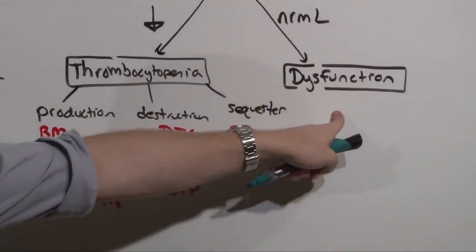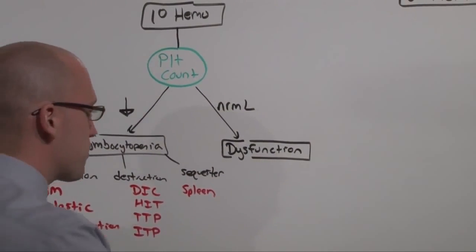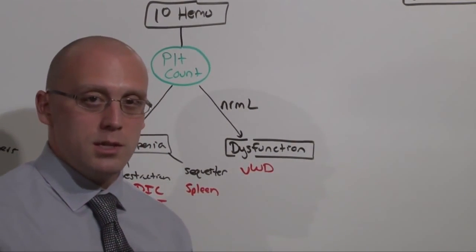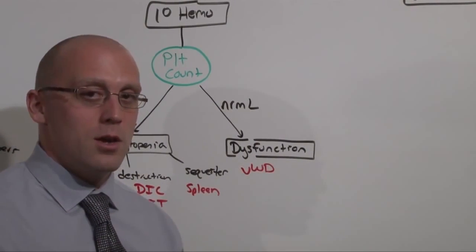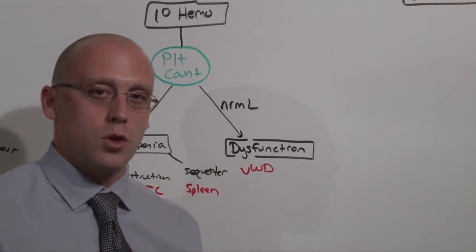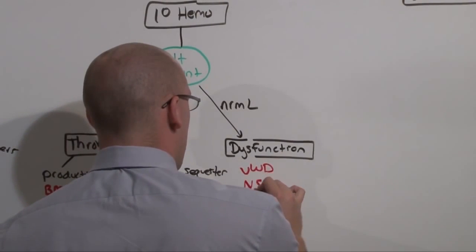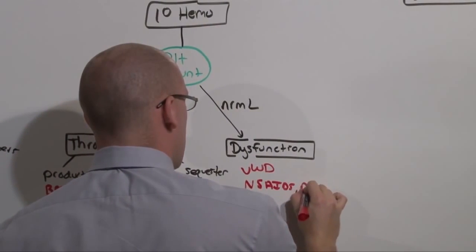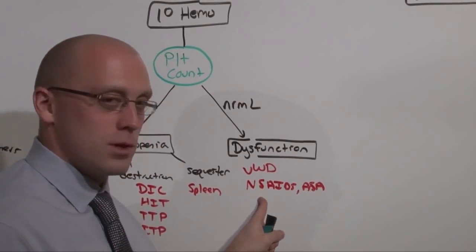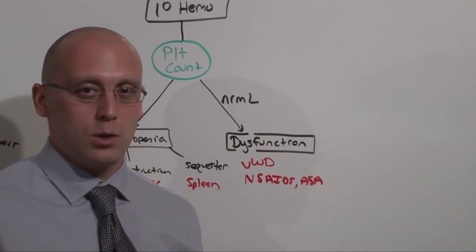If you come over and said to dysfunction where they have a normal platelet count, now you're talking about some congenital disorders or medications. Von Willebrand disease definitely is prevalent enough where you'll see it. Glansman's thrombastenia and Bernard-Soulier, the congenital defects that present with the same platelet dysfunction, you aren't going to see because they're so rare. Don't go looking for them. We do this all the time. We cause platelet dysfunction by giving NSAIDs, aspirin, and other antiplatelets like clopidogrel.